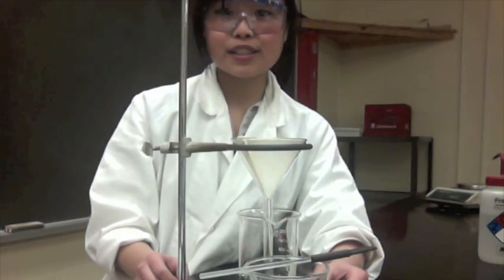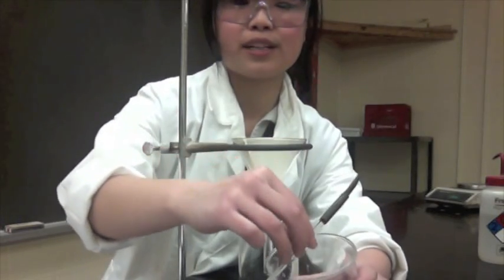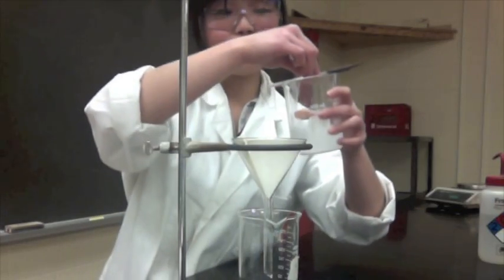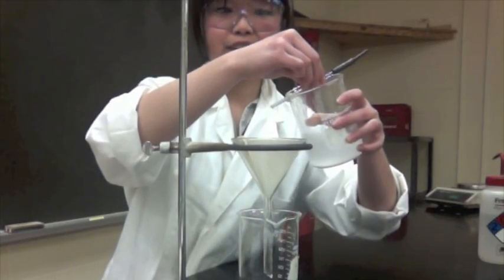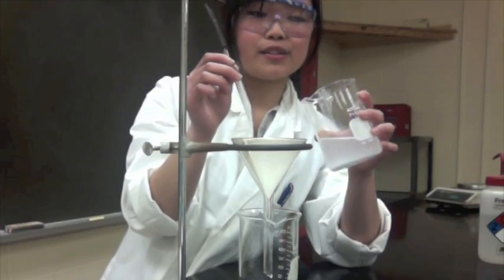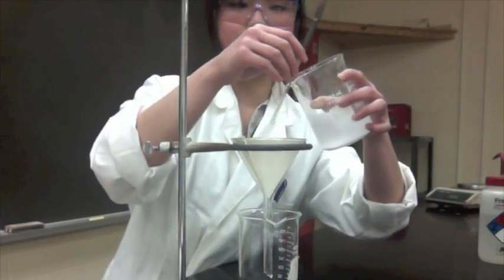Now it is time to pour your solution into your funnel. Take your glass stirrer and hold it towards the spout of the beaker like so. And using two hands, you will want to pour your solution down the funnel. The point of the glass stirrer is to make sure that none of the solution will sprout out everywhere or drip to some place where you don't want it to.